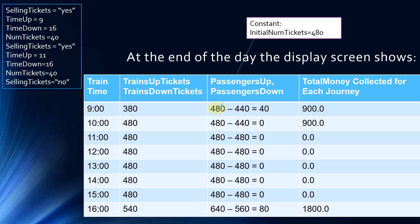Here's a little side note: if on the IGCSE exam they ask you to give a constant for task 3, you could have the numbers 480 and 640. These are numbers that never change. They represent the initial number of tickets on the 9 o'clock through 15 o'clock trains, which is 480. For the 16 o'clock train, the initial number of tickets at the start of the day is 640.